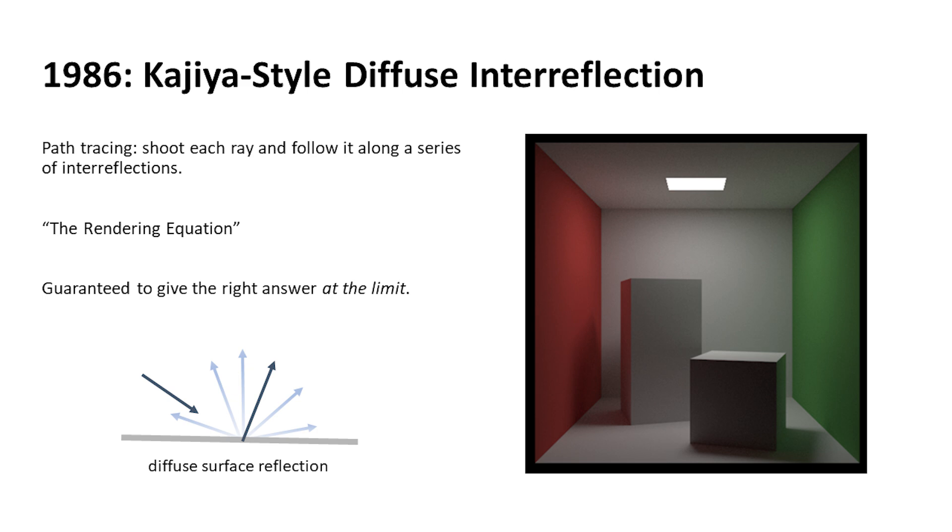So what you do is you shoot more rays in different directions, but with path tracing, you shoot just one ray in one direction and follow it along a path. Let's show you what that looks like.